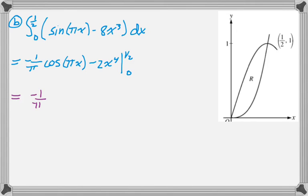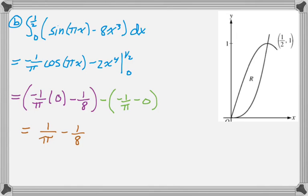So we're plugging in 1/2, which gives us the cosine of π/2 is 0. So negative 1 over π times 0 drops out. Plug in 1/2 to the 4th is 1/16. So negative 2 times 1/16 is negative 1/8. And now we have to plug in 0. The cosine of 0 is 1. So negative 1 over π minus 0. And then this simplifies to 1 over π minus 1 over 8. And that's the area of A.